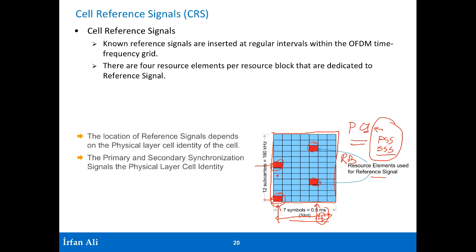These cell reference signals are typically transmitted at much higher power than the other elements. The other resource elements have lower power. If you look at the power, the power of your CRS is much higher than the power of your other resource elements — your PDSCH or other resource elements that are transmitted.